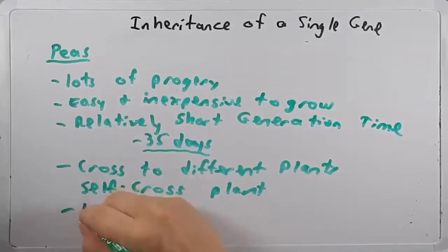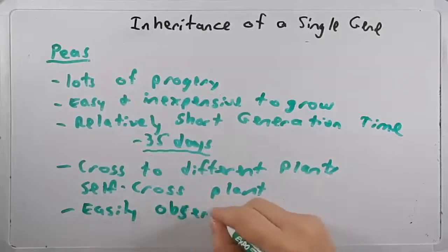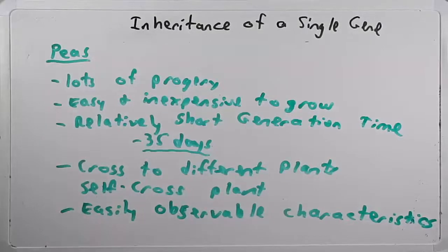The characteristics that he looked at were easily observable. He looked at the color of the pea plant. He looked at if they were tall or short, if the peas were wrinkled or smooth, yellow or green. So he looked at many different things that were easy to observe.